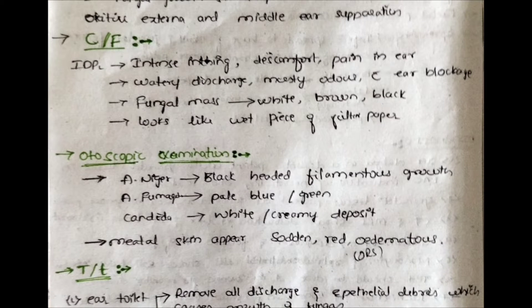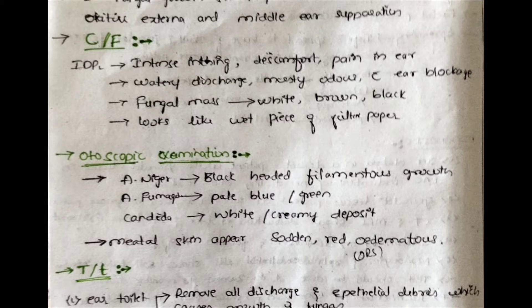The clinical features of otomycosis are intense itching, discomfort, and pain in the ear, along with watery discharge and moist odor with ear blockage. A fungal mass that is white, brown, or black in color is present, which looks like a wet piece of filter paper kept in the ear.